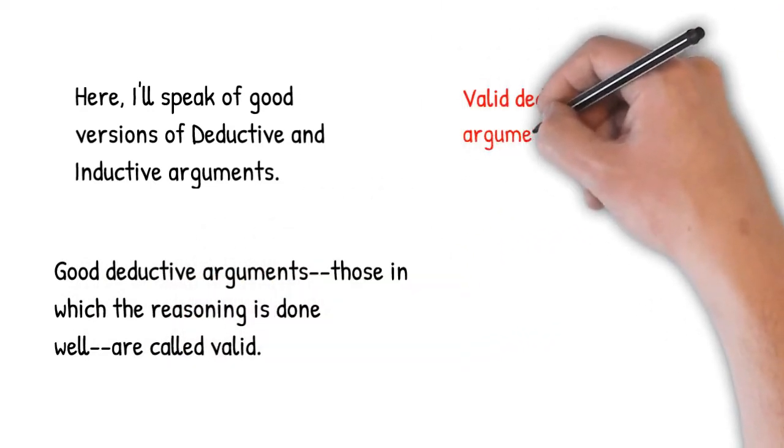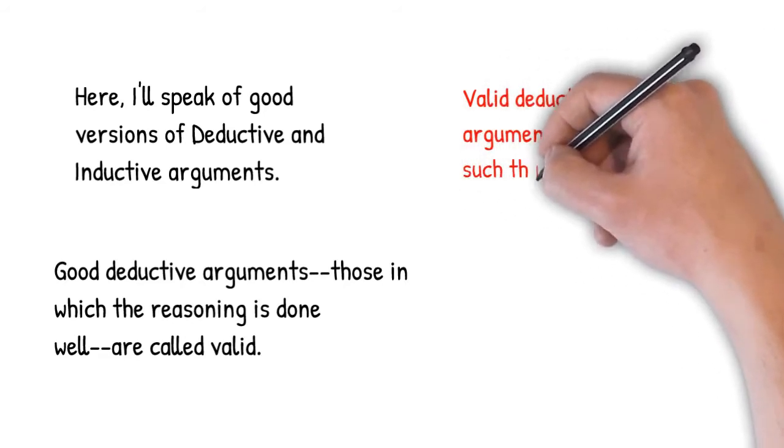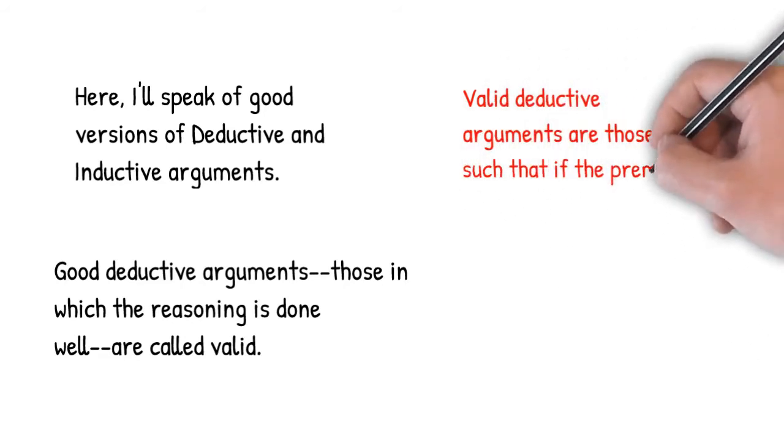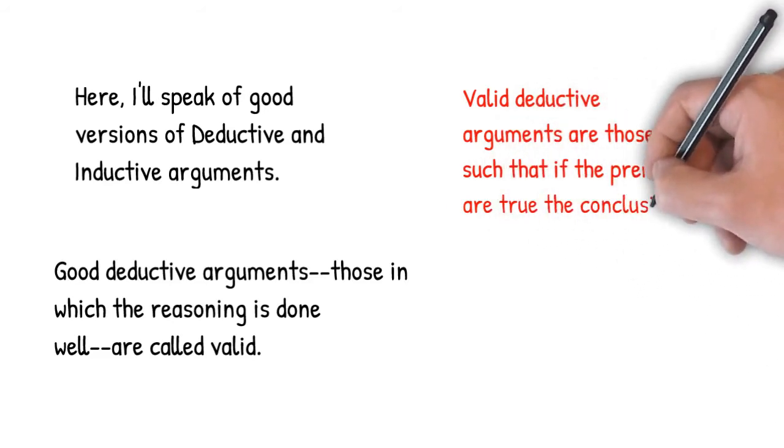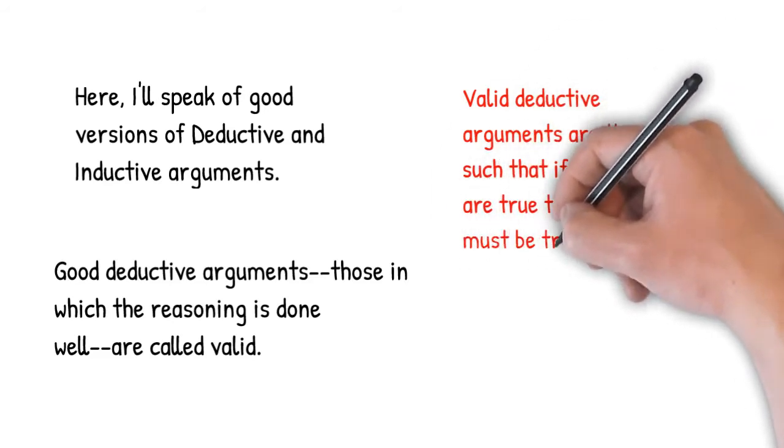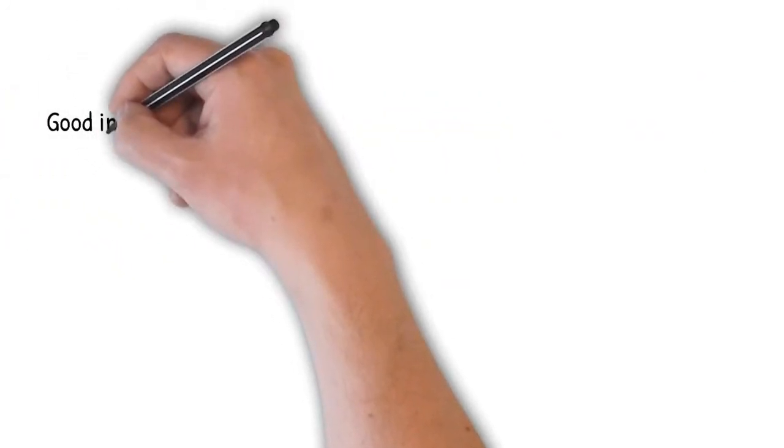Valid deductive arguments are ones such that if the premises are true, the conclusion must be true. There is that guaranteed connection between the premises and the conclusion.